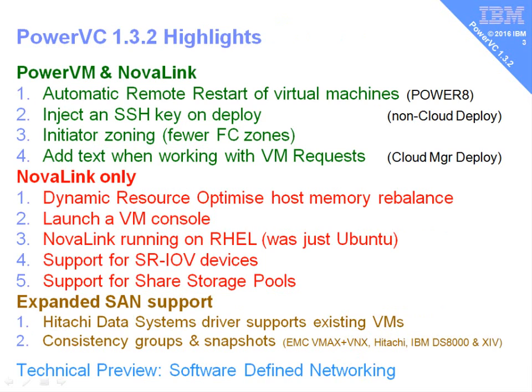I've categorized the highlights into four different groups. At the top we have features that work whether you're in PowerVM mode with an HMC or in NovaLink mode. Then we have some features that only work in NovaLink mode. Then there's expanded SAN storage, and finally a technical preview looking at software-defined networking — a powerful feature, but not covered in detail here as it's a standalone product and won't integrate with PowerVC just yet.